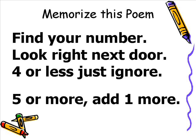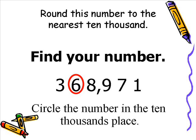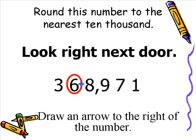For example, let's say we want to round 368,171 to the nearest 10,000. Remember the point — the first line says find your number. In this case, we're rounding to the nearest 10,000, so the 6 is in the 10,000 spot. We have circled the number in the 10,000 place. The next line says look right next door, so we've drawn an arrow to the right of the number we're going to round.